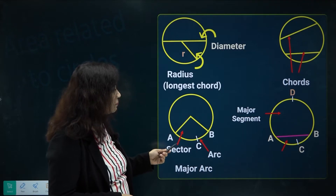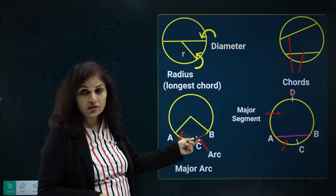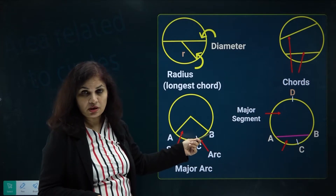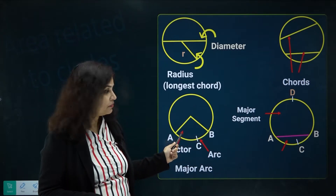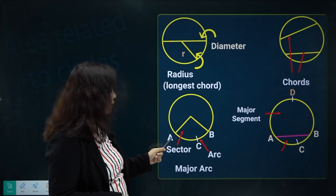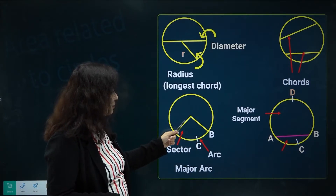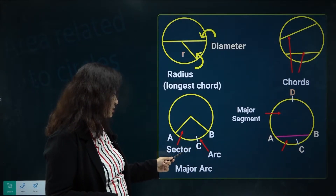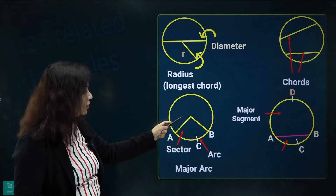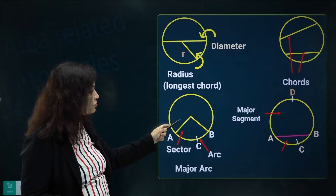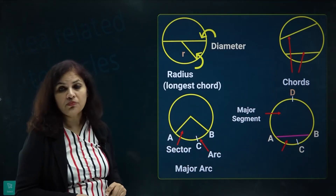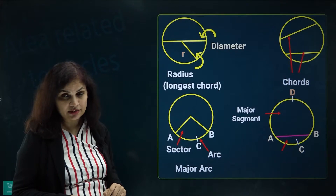Now coming to the arc — an arc is a part of a circle, a part of the curvature. AB is an arc. Connecting AB to the center using two radii, those two radii and the corresponding arc form a region which is known as the sector.